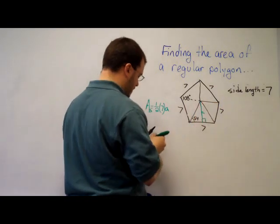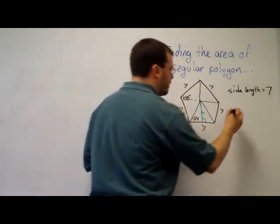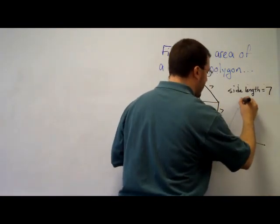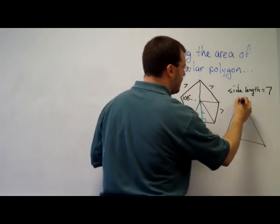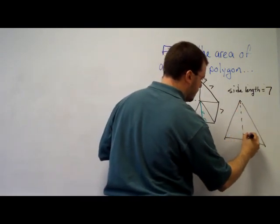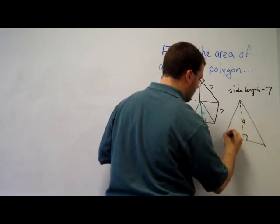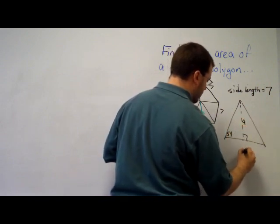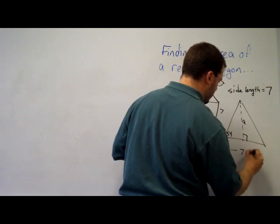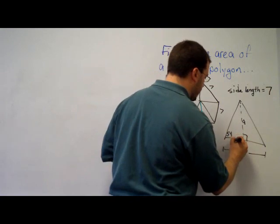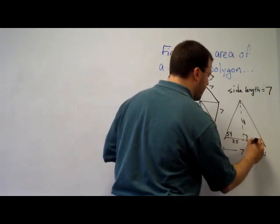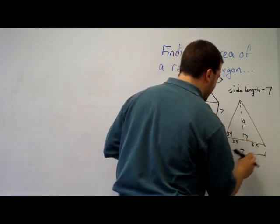So this triangle, this is the way I like to do it. I like to just draw it separately so I have a nice big triangle to work with, something that I can write on. We said that the apothem cuts the side length in half, so really that's 3.5 and 3.5.